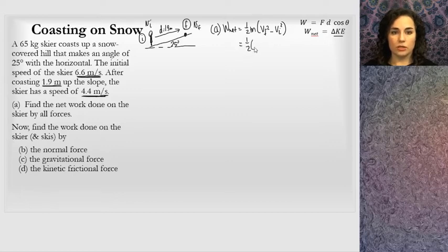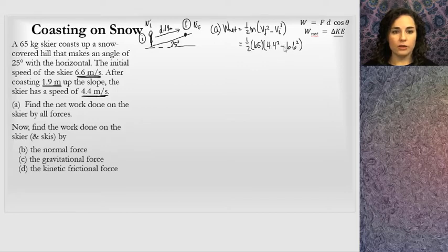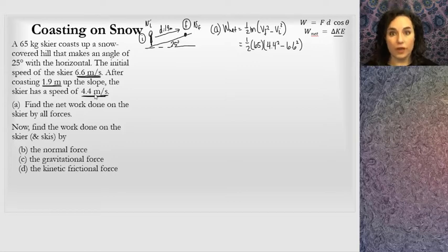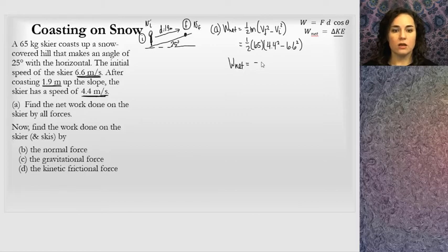Plugging in: one-half times 65, times (4.4 squared minus 6.6 squared). That's going to give a negative number — and we're fine with that. The person is slowing down, so there's energy being taken away from the skier, and net work will be negative. That number is negative 786.5 joules.